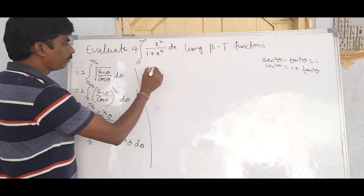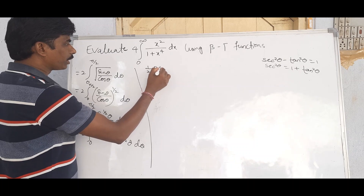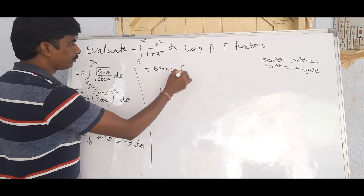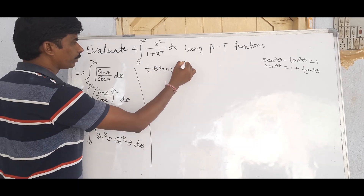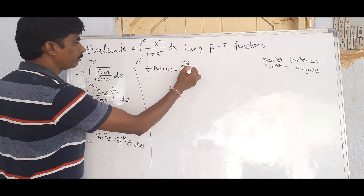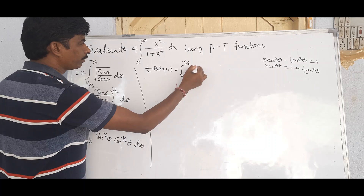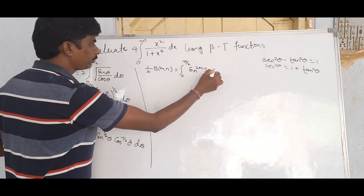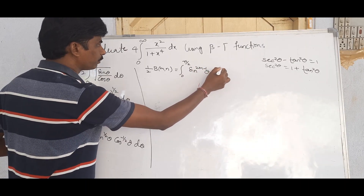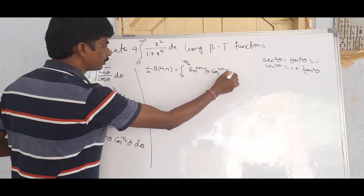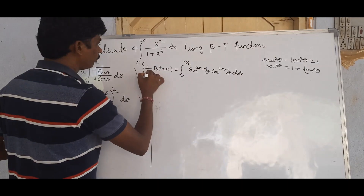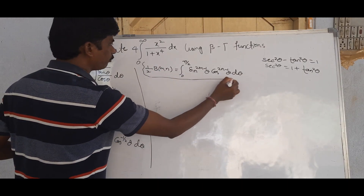We use the beta function property: (1/2) β(m, n) = ∫₀^(π/2) sin^(2m−1) θ · cos^(2n−1) θ dθ. We will apply this formula to our integral.